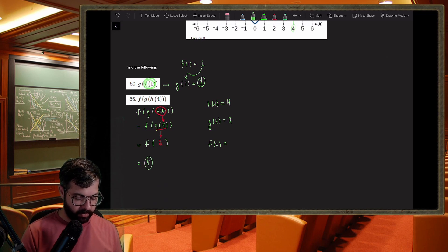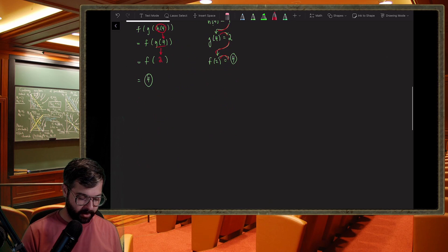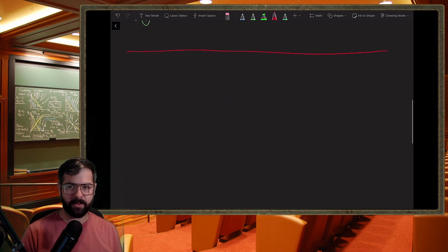So we fed h four, it spit back four. We fed g four, it spit back two. We fed f two, and it spit out four. So you can kind of see again this idea of a chain of inputs and outputs.